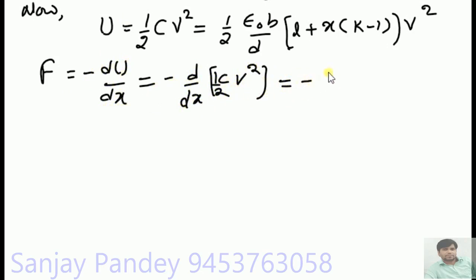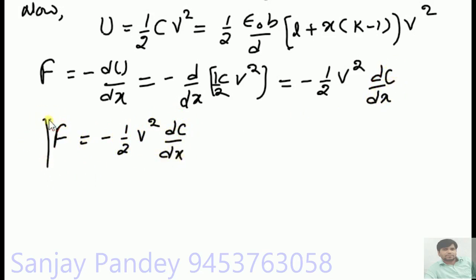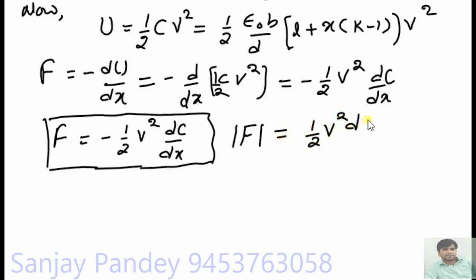So the force is F = −½V² · dC/dX. The negative sign shows that the force is attractive in nature. The magnitude of force is |F| = ½V² · dC/dX. Substituting C = (ε₀B/d)[L + X(K−1)] and differentiating with respect to X (L is constant, so dL/dX = 0; dX/dX = 1), we get |F| = ½ε₀BV²(K−1)/d.